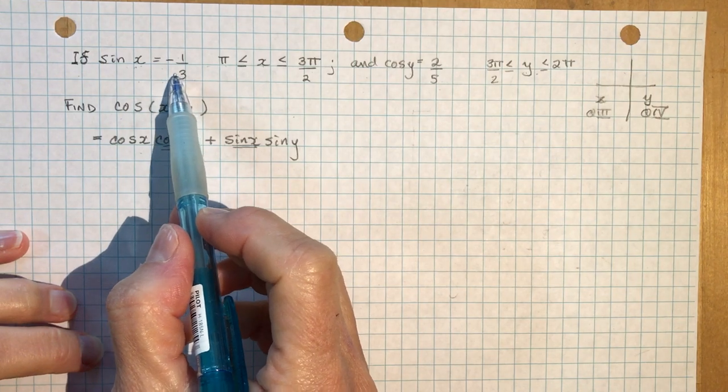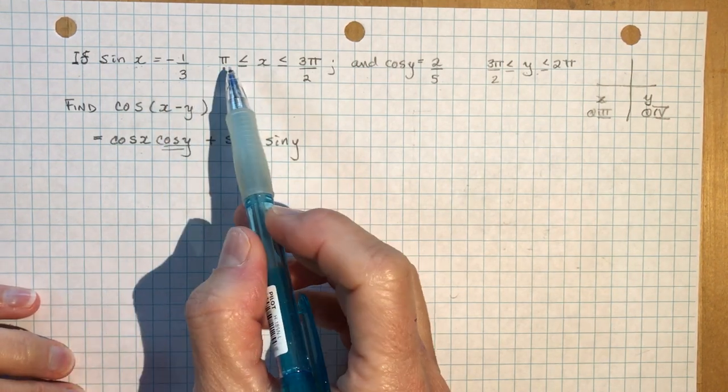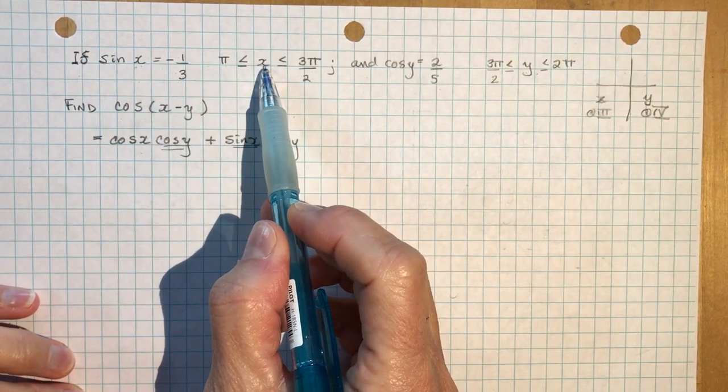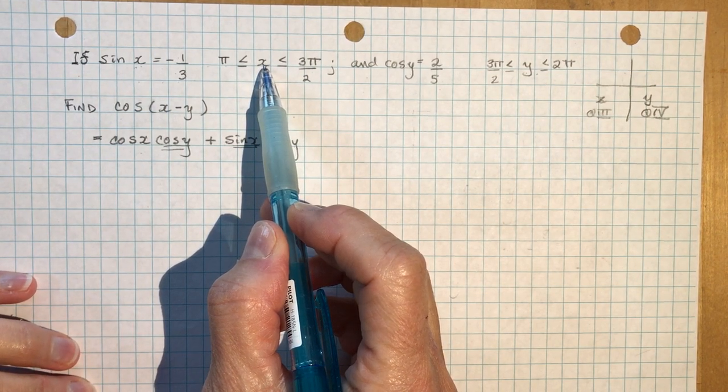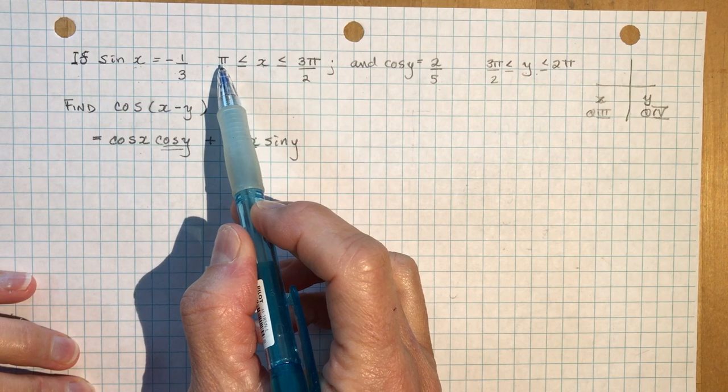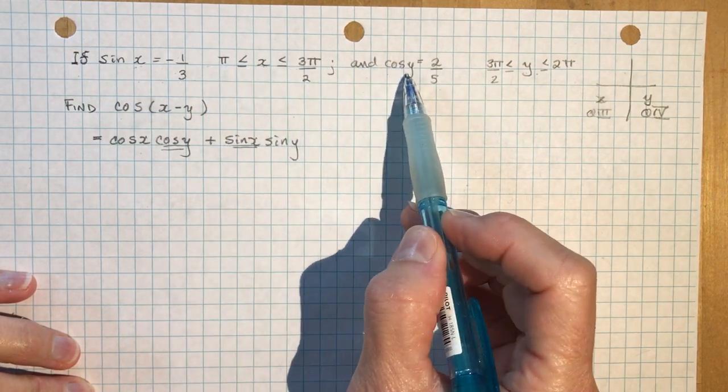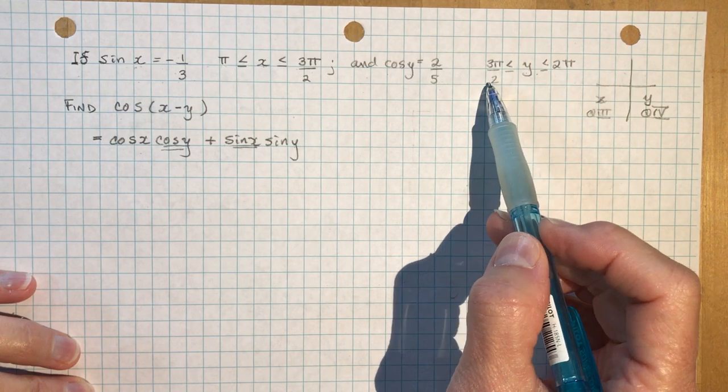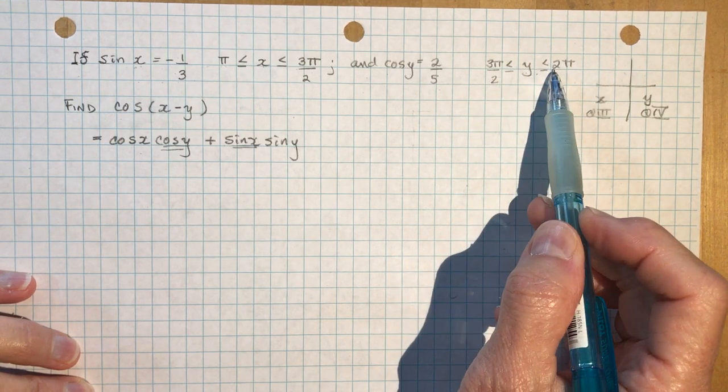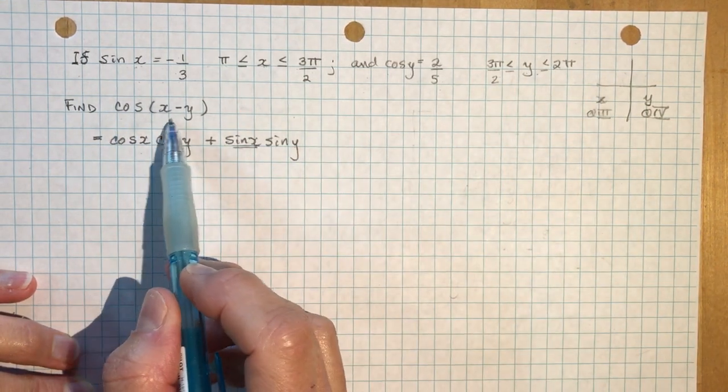So it says if sine of x is minus 1 over 3, and x, this is the angle. If the angle is between pi and 3 pi over 2, and the cos of y is 2 over 5, and y is in the fourth quadrant, find the cos of x minus y.